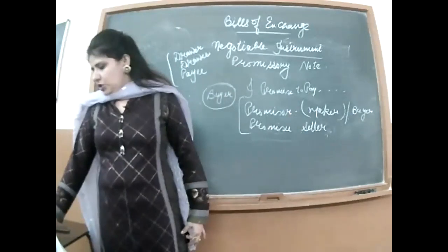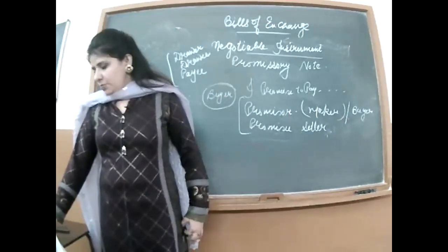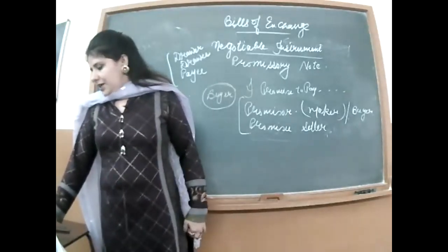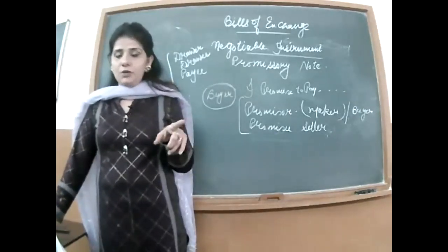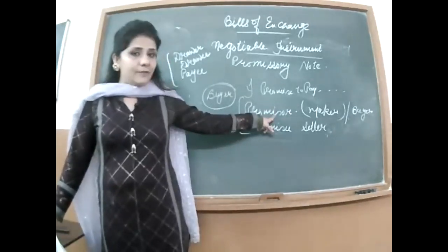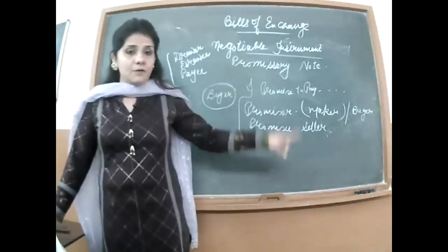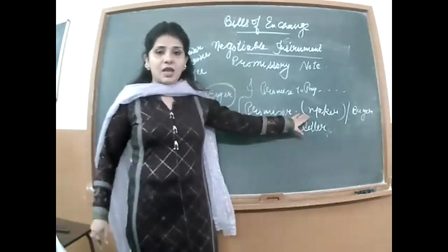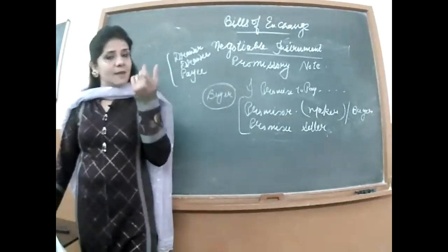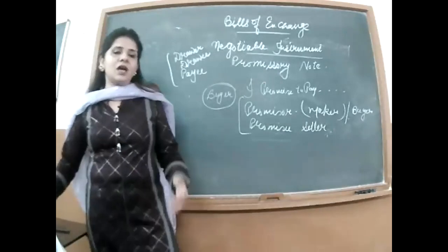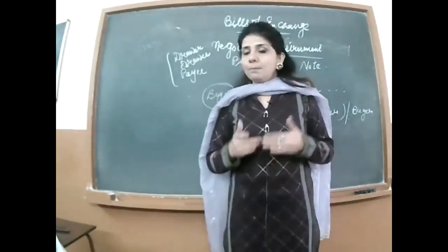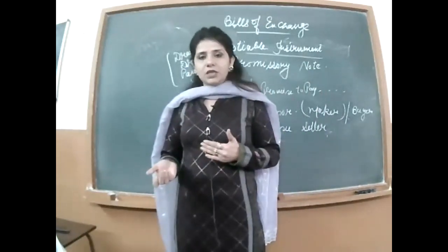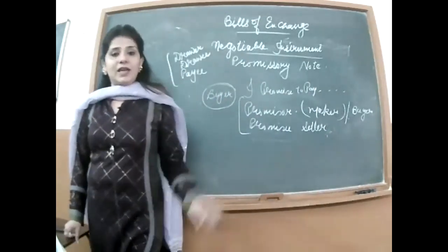As per the Negotiable Instruments Act definition, a promissory note is an instrument in writing — not being a bank note or currency note. The maker here is the buyer. To pay a certain sum means you have to specify how much money you will pay, in money only. For example: 'I promise to pay to you rupees 10,000 after two months for goods purchased from you.' The book will also show you the document format on the next page.